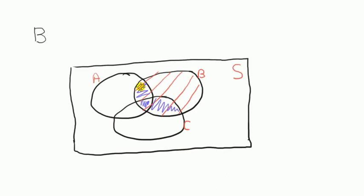Why? Because this bit here denotes that A and B occurs. This bit here denotes that C and B occur. This bit here is that A and B and C occurs.